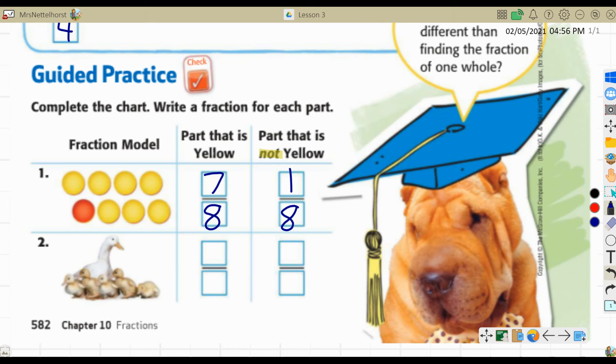Now number two, I'm going to have you do both of them together. So you're going to count all the ducks, the baby ducks and the mama duck and write the fraction for the part that is yellow and then the part that is not yellow. So pause your video.